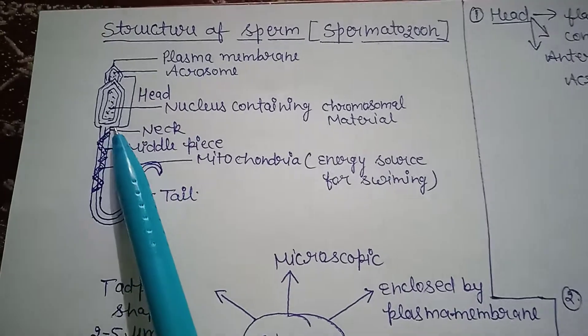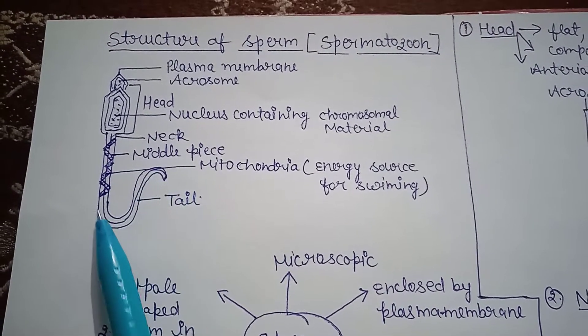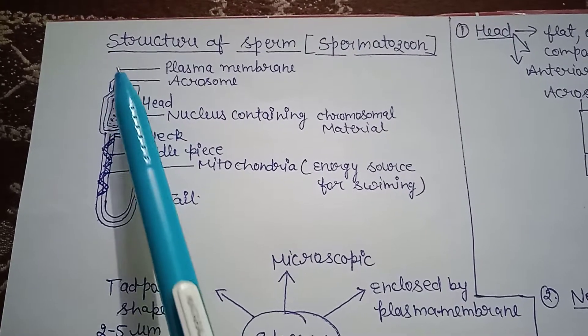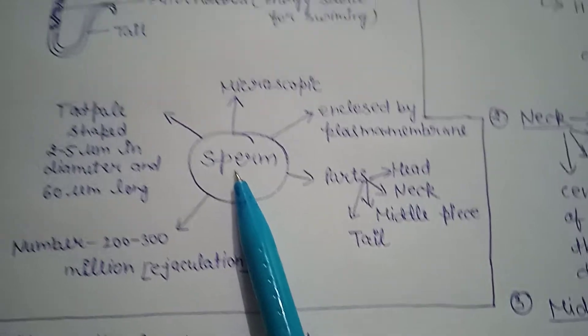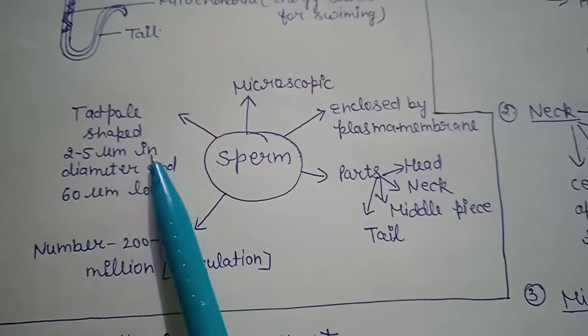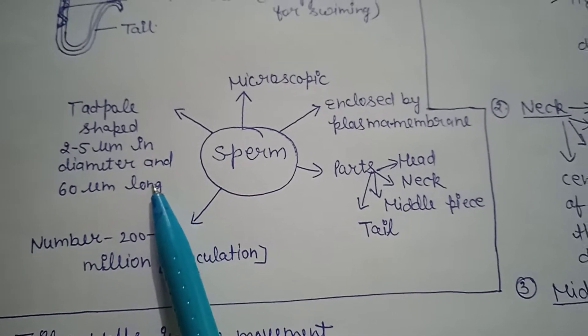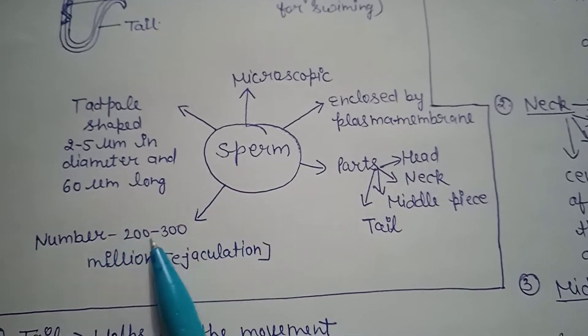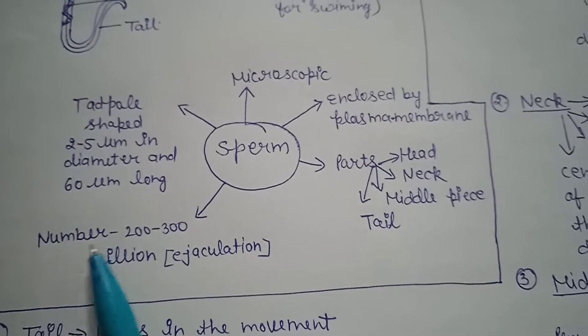Let's see in this diagram. This is covered by a thin membrane known as plasma membrane. Next is the shape of the sperm: tadpole-shaped, 2 to 5 mm in diameter and 60 mm long. Now we talk about the number of sperm throughout ejaculation. The number of sperm is 200 to 300 million during ejaculation.